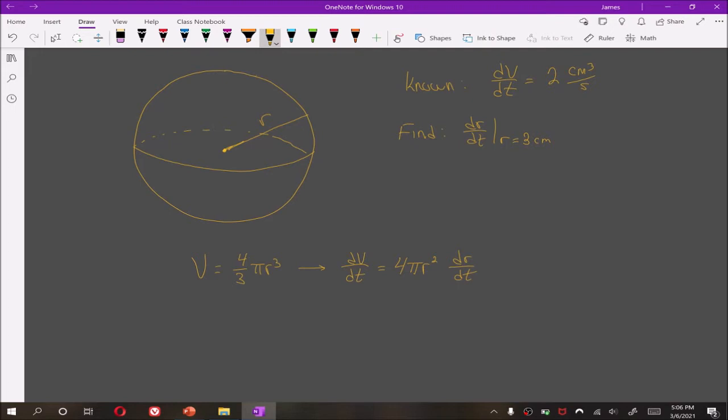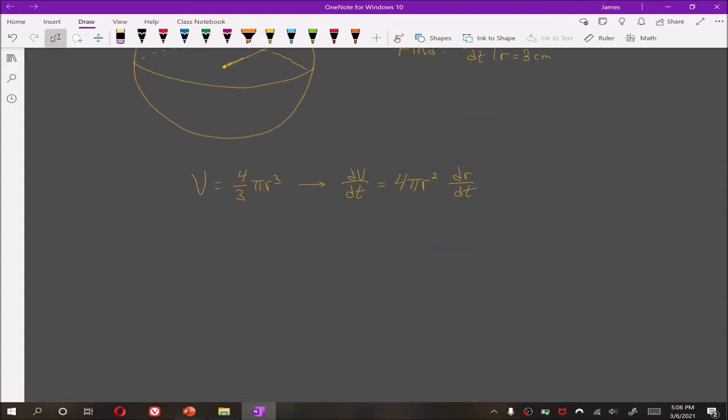Remember, we're doing derivative with respect to time. So we have to do chain rule on every variable. Since we wish to find dr/dt, we can solve for it by dividing by 4π r². Thus, 1/(4π r²) times dV/dt is equal to dr/dt.